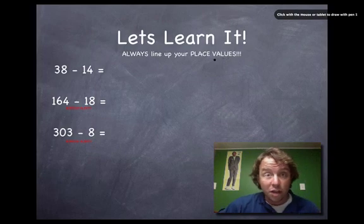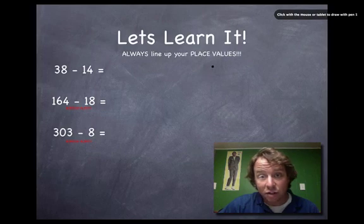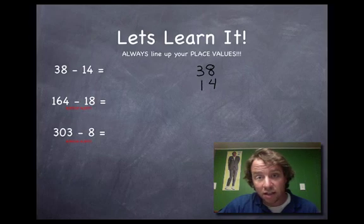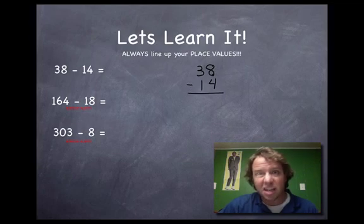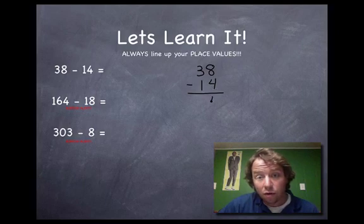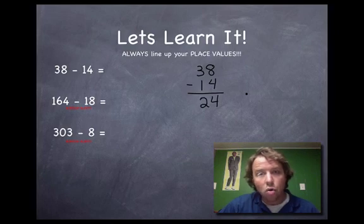Let's try number one. Remember to always line up place values. Like in multiple digit addition, I like to write my problems from right to left. So I write 38 starting with the 8, then the 3 — that makes lining up the ones place easy. For 14, the ones places 8 and 4 are lined up, and the tens places 3 and 1 are lined up. Go from right to left: 8 minus 4 is 4, and 3 minus 1 is 2.